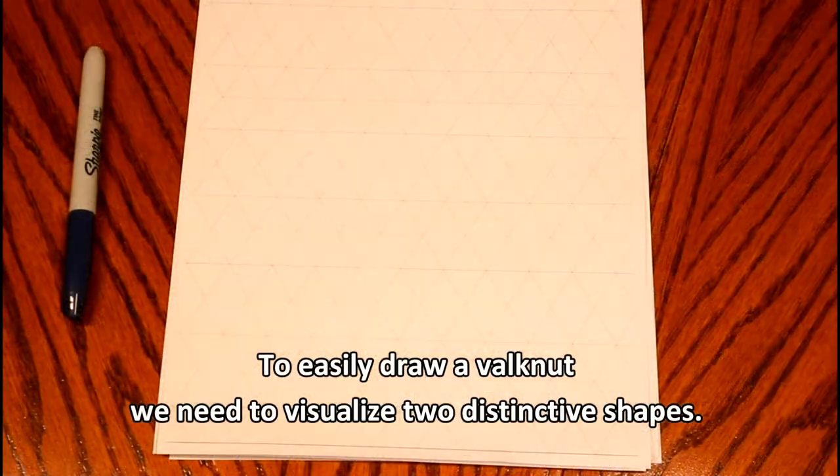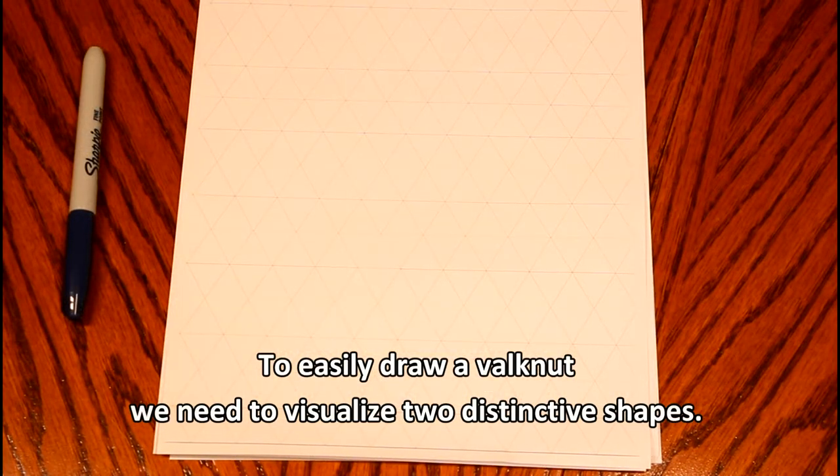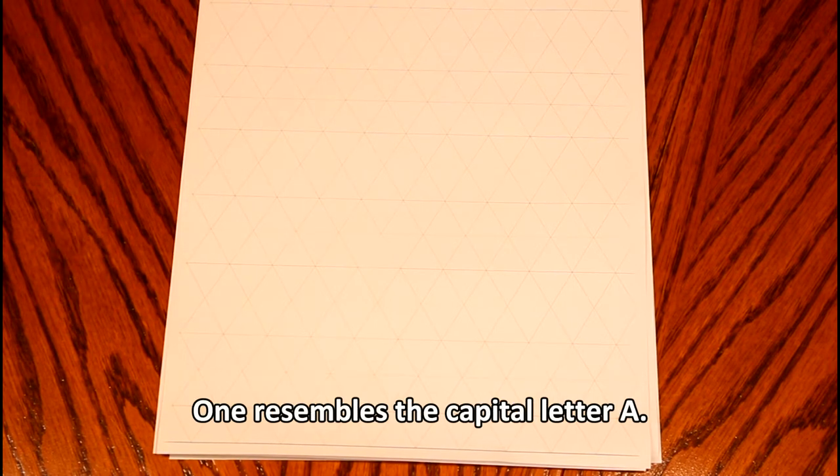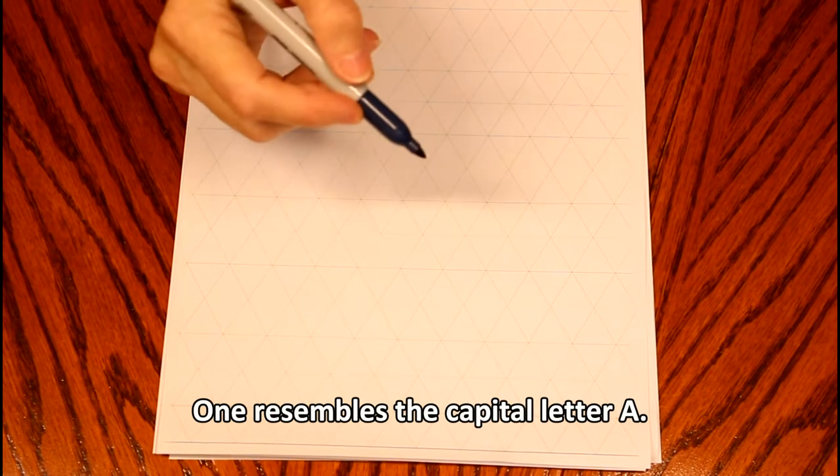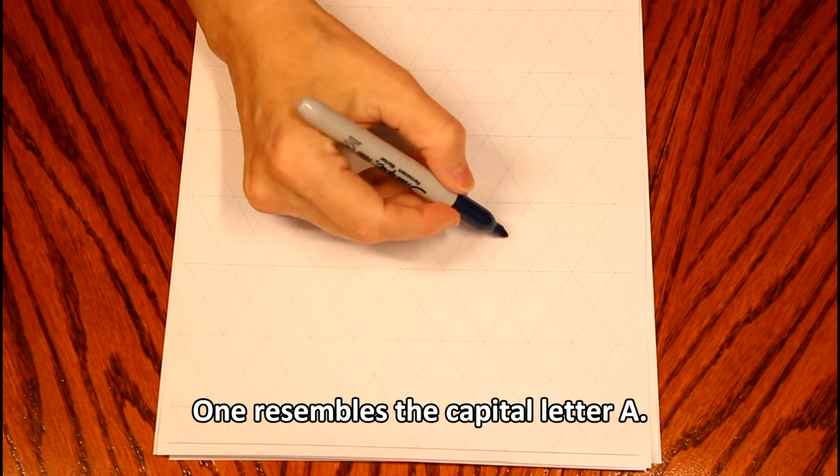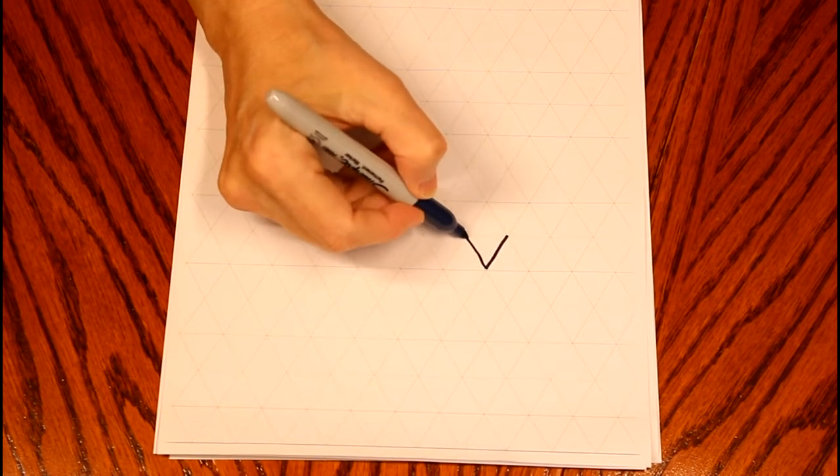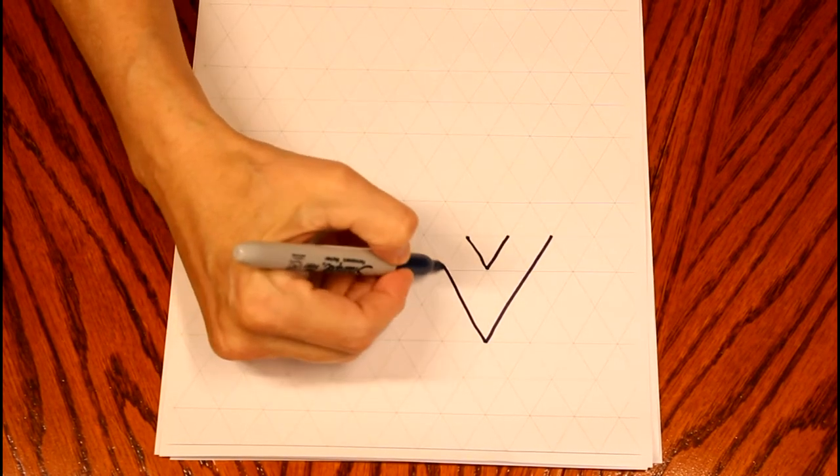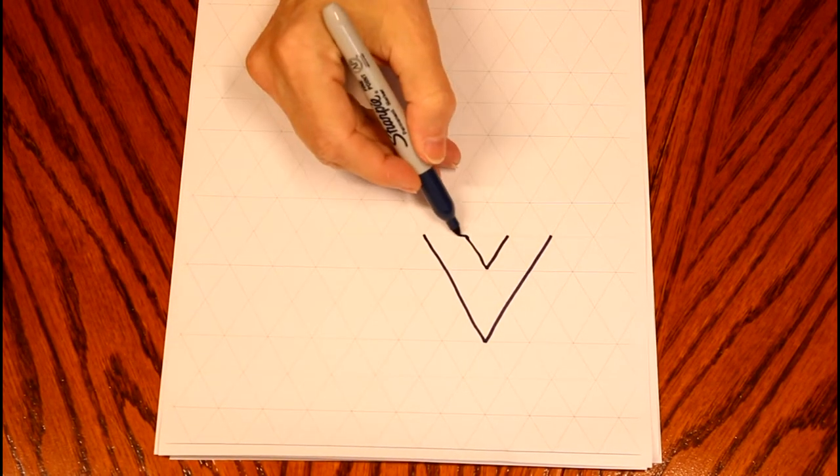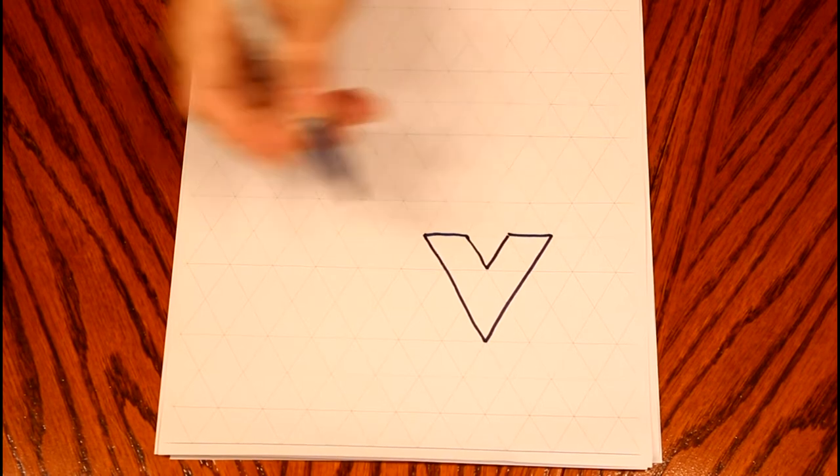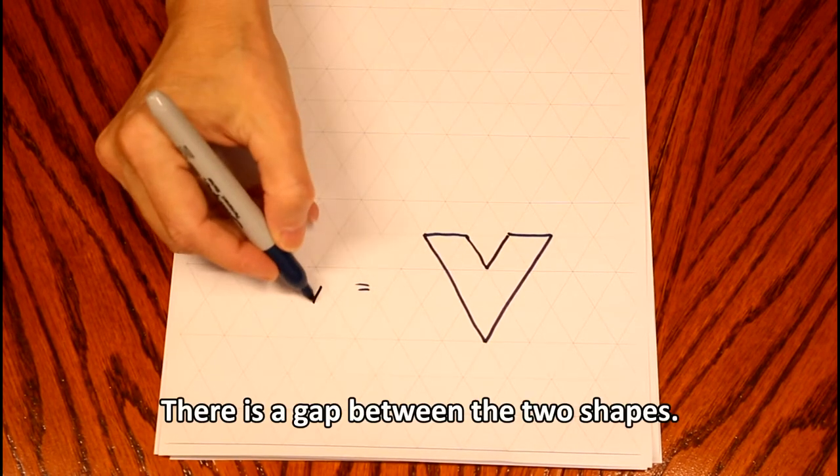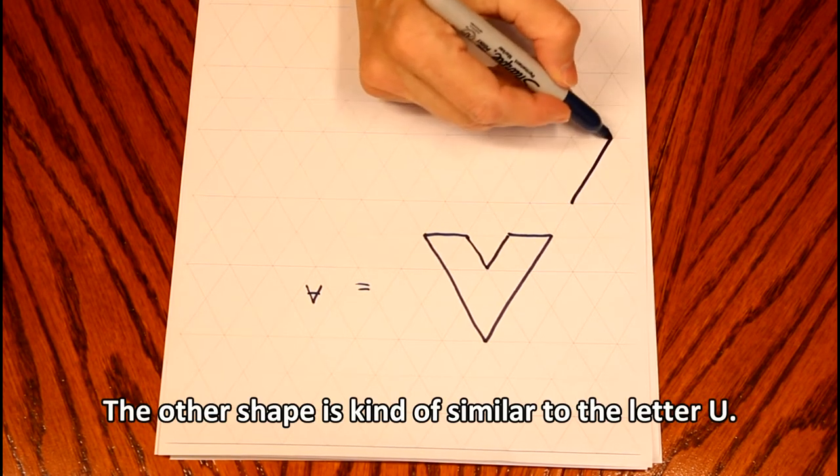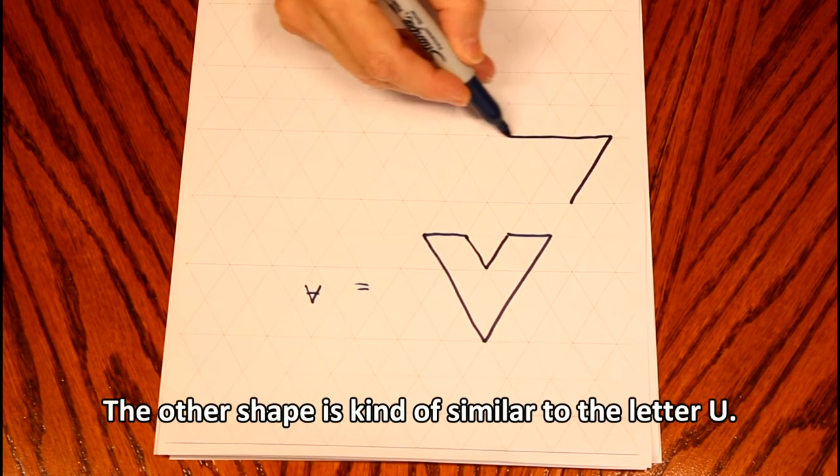To easily draw a valknut, we need to visualize two distinctive shapes. One resembles the capital letter A. There is a gap between the two shapes. The other shape is kind of similar to the letter U.